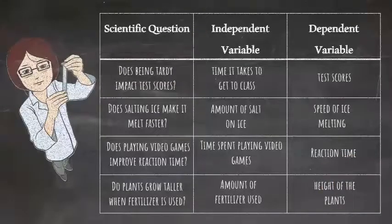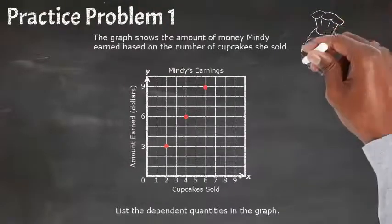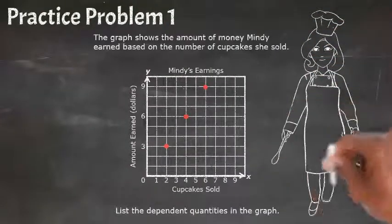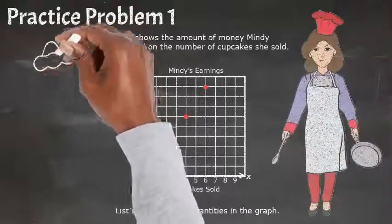Let's check out a practice problem. The graph shows the amount of money Mindy earned based on the number of cupcakes she sold. List the dependent quantities in the graph.